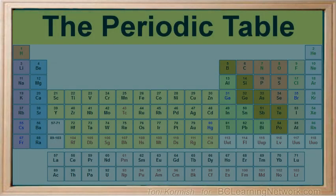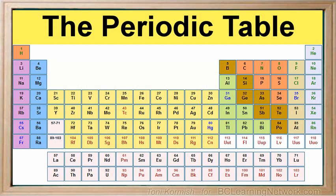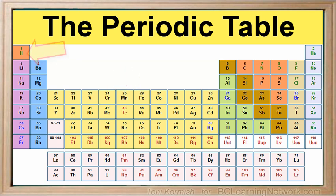When we look at the periodic table of the elements, one can see that the periodic table is organized by atomic number. We can see that the first element listed in the periodic table is the hydrogen atom and it has an atomic number of one. The second atom listed in the periodic table is the helium atom and it has an atomic number of two.